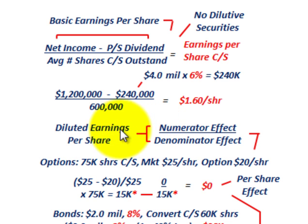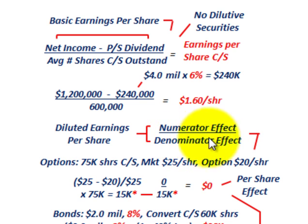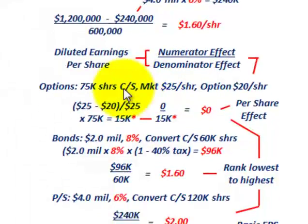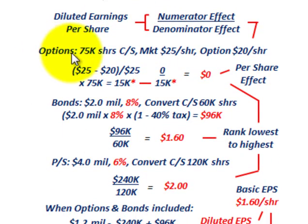For diluted earnings per share, we first have to determine the numerator effect divided by the denominator effect for each convertible security. We need to do this to figure out the order in which we determine our diluted earnings per share.